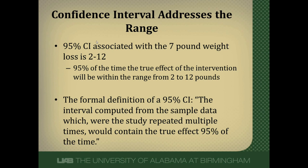Classically, we use a 95% confidence interval because of the p-value less than 0.05 being statistically significant. The confidence interval in this particular study around that 7-pound weight loss is 2 to 12. One way to interpret that is that 95% of the time, the true effect of the intervention — in this case the weight loss intervention — will be within the range from 2 to 12 pounds. So our best guess from this study is a 7-pound weight loss, but it could be as little as 2 pounds or as great as 12 pounds. That's a classic clinical interpretation of a confidence interval.